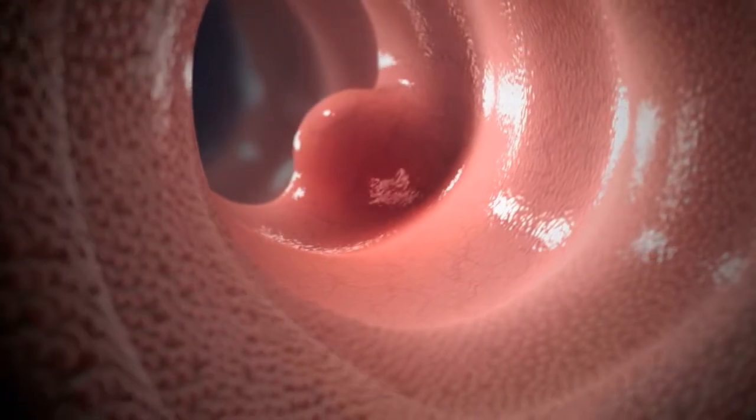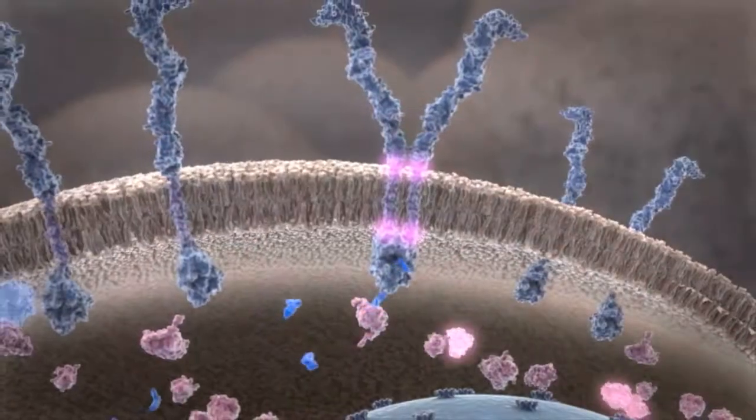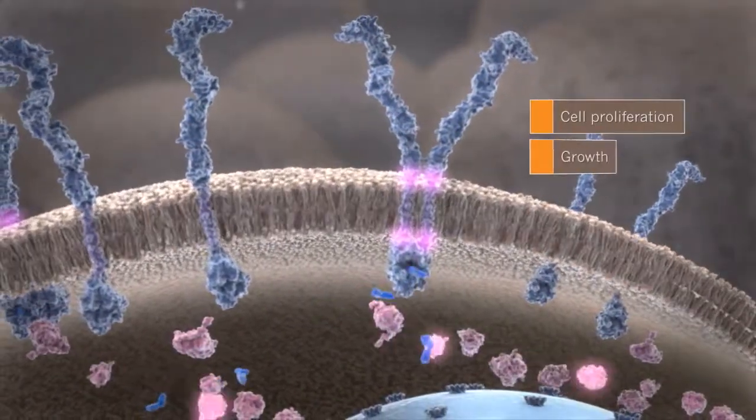As we have seen here, GISTs may arise as a result of mutant KIT proteins driving constitutive signaling for proliferation, growth, and survival. Imatinib can block this signaling to inhibit cell proliferation and induce apoptosis in many KIT-positive GIST cells.